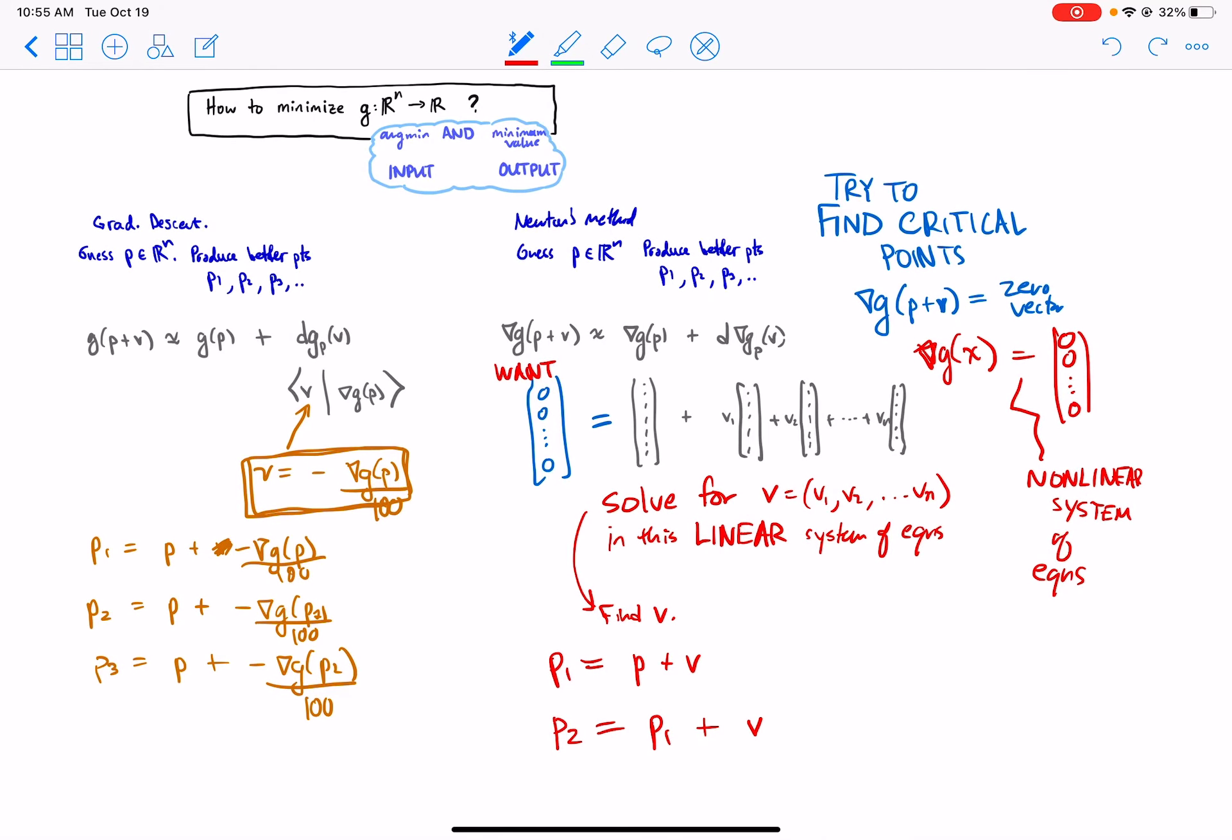So at each step here, we just compute the gradient, we know what V should be, and we add vectors. At each step here, we have to do more work. We compute the gradient—we need it for our system of equations. But then we actually compute the derivative of the gradient map, produce a linear system which we then solve, and then finally we do vector addition to update and find our new guess point.